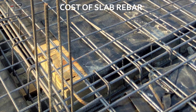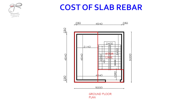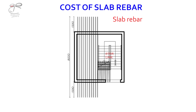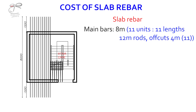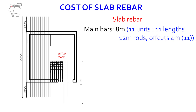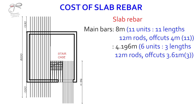For the slab, the purpose here is to create mesh for the areas that have a floor. We're going to do members which are about 8 meters for each length of the main rebars. We'll specify 8 meters for the main bars, and there are about 11 units of that — so 11 lengths of 12-meter rods. There's going to be about 11 off-cuts of 4 meters from that. For the other side, that is about 4.196 meters — we'll be needing 6 units of that, so 3 lengths of 12-meter rods should suffice.